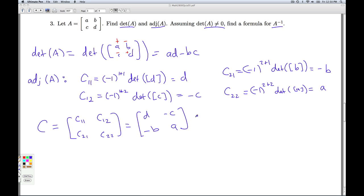The adjoint of A then is defined as the transpose. So the first row becomes the first column. The second row becomes the second column. So that's my adjoint.